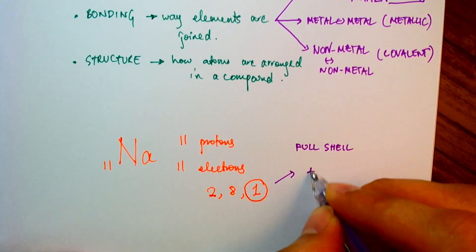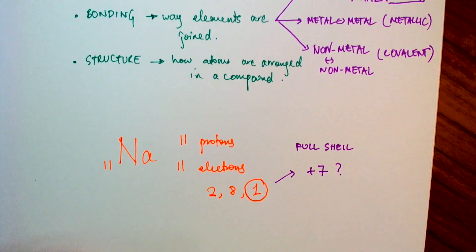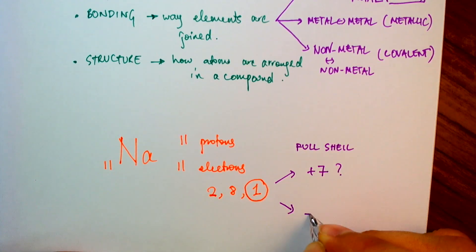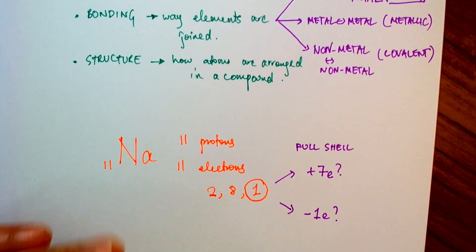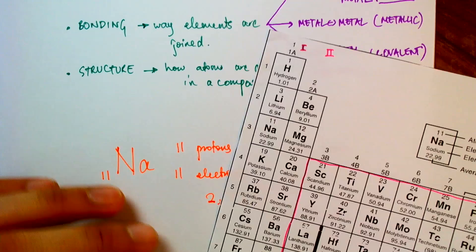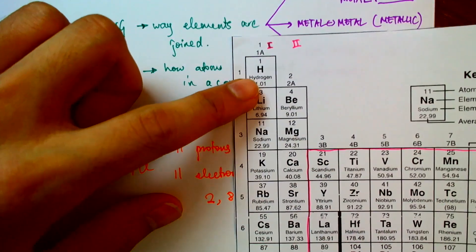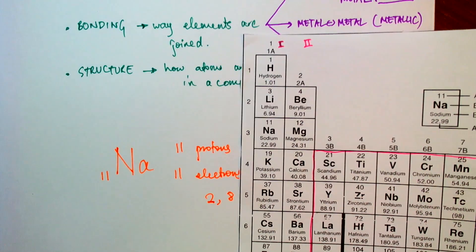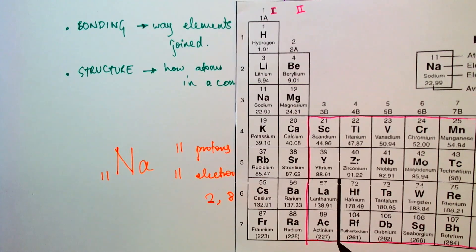It can either gain seven electrons, or it can lose one electron. Now, as you might imagine, it would be easier to just lose one electron than to gain seven electrons. So indeed, that is what sodium does. It tends to want to lose one electron. And that's the case with all of the elements in group 1. So group 1 elements all tend to have the same chemical properties, because they all tend to want to lose one electron.